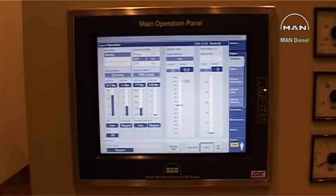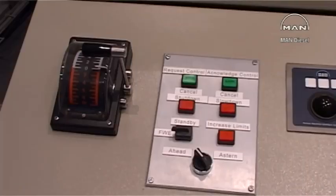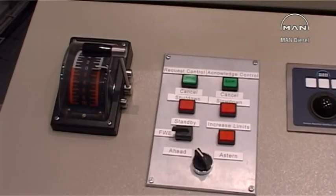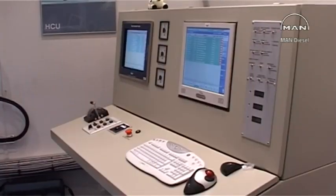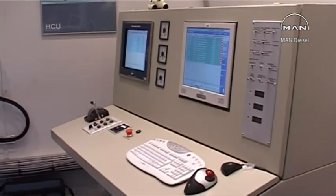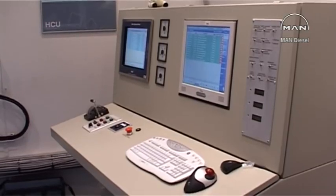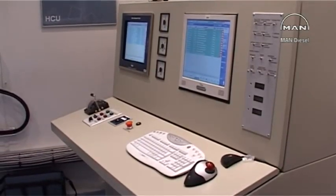The main operating panel placed in the engine control room is the interface for the engineer and operating engine. The MOP communicates with the engine control system and gives the operator an overall view of the engine condition during voyage and standstill.